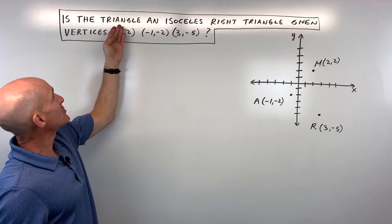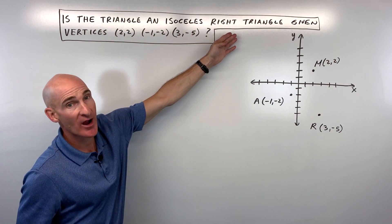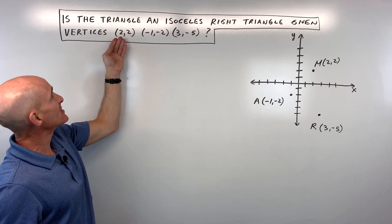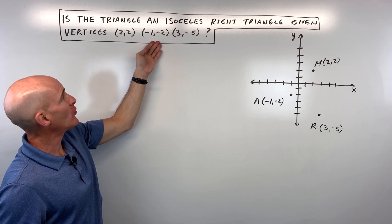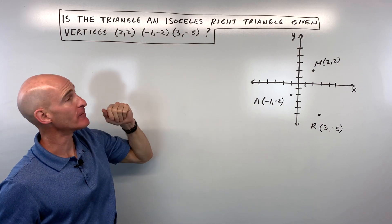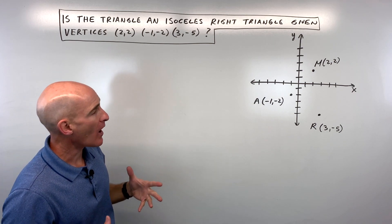Okay, in this video we're talking about: is the triangle an isosceles right triangle given the vertices (2,2), (-1,-2), and (3,-5)? So how can we tell whether this is going to be an isosceles right triangle or not?